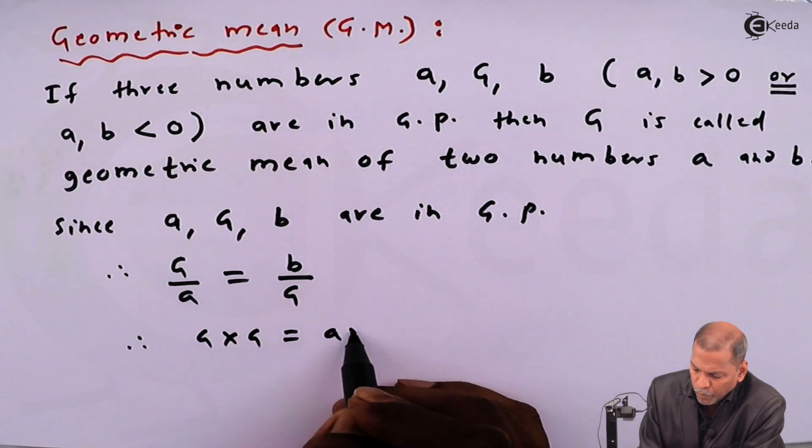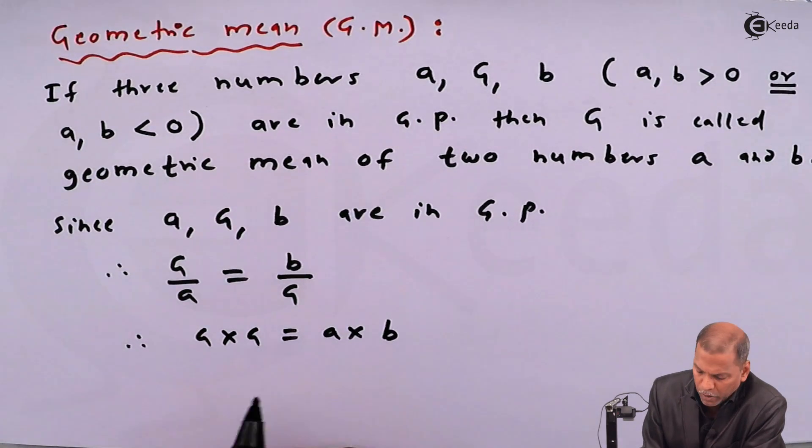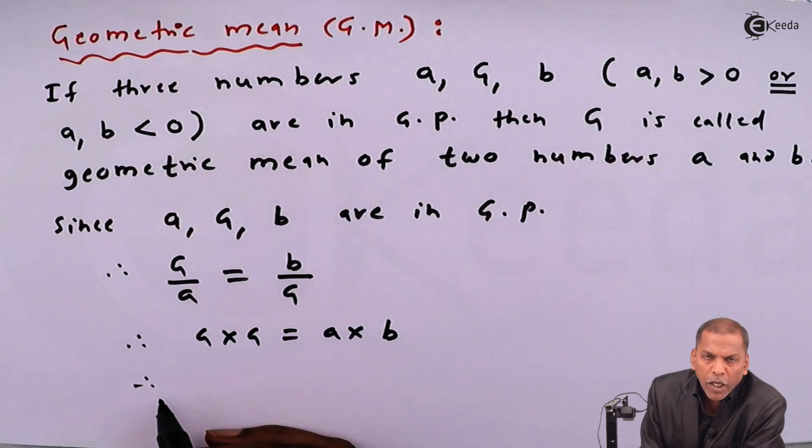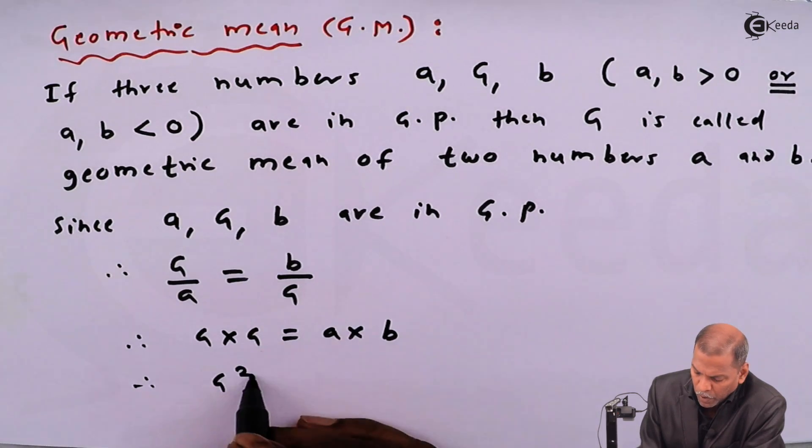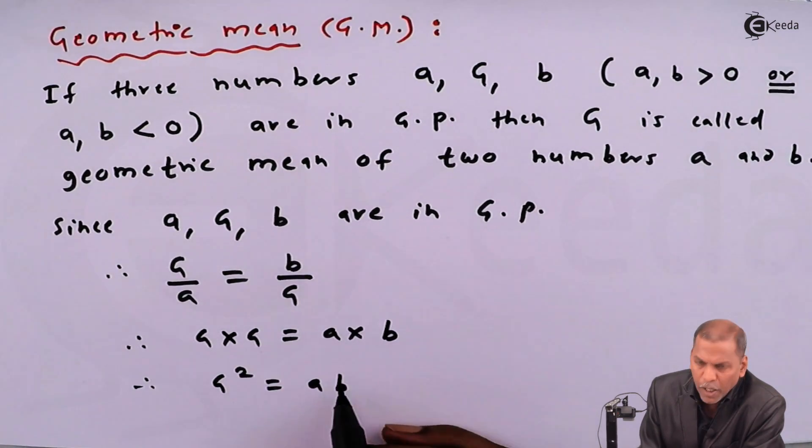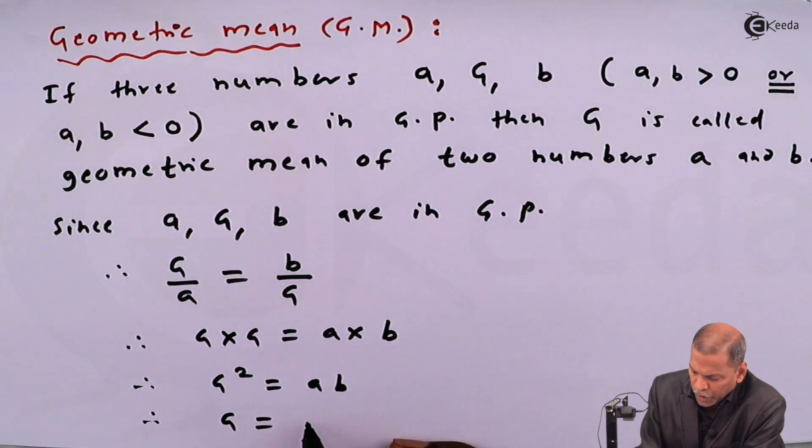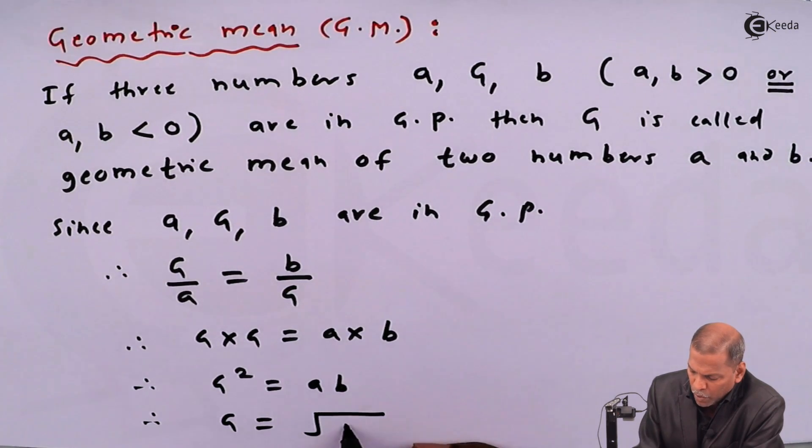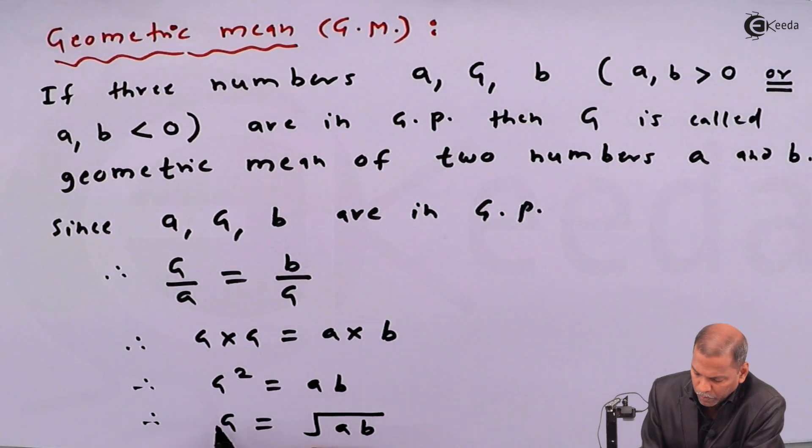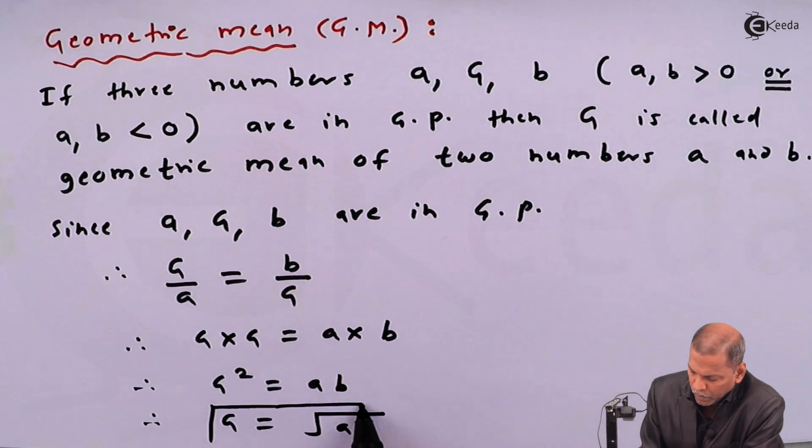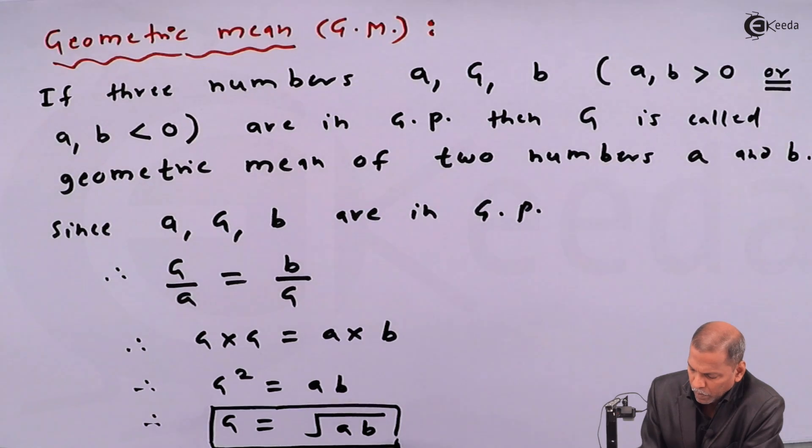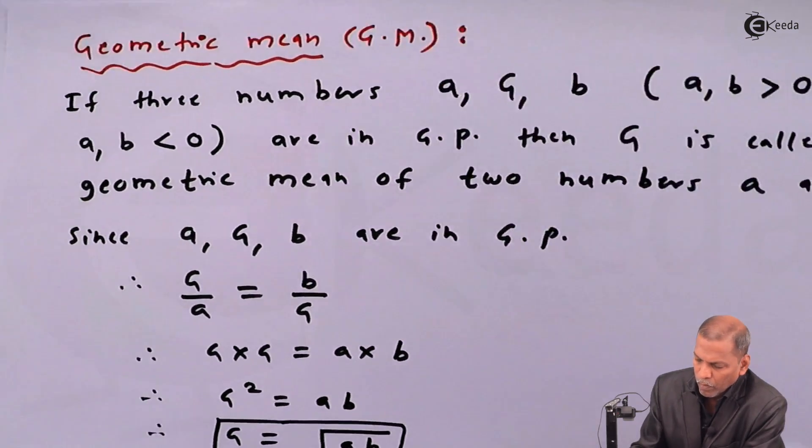On cross multiplying, we get G × G = a × b. On further simplification, G² = ab. Then taking the positive square root on both sides, we have G = √(ab).